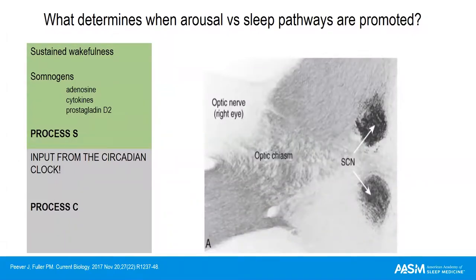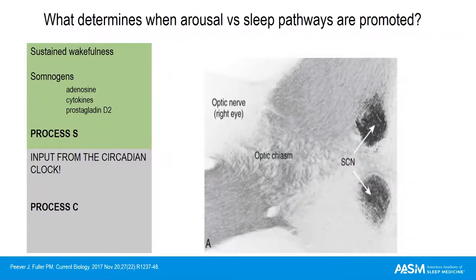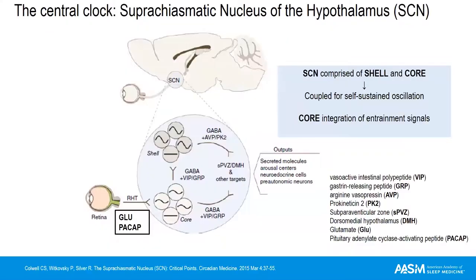The interaction between process S and process C determines when wake-promoting versus sleep pathways are activated. With sustained wakefulness, somnogens accumulate — adenosine, cytokines, prostaglandin D2 — mediating process S. This process is also controlled by input from the circadian clock, process C. Our central clock is located in the suprachiasmatic nucleus of the hypothalamus, behind the optic chiasm. The SCN is a paired nuclei comprised of a shell and a core; their coupling is vital for the self-sustained 24.2-hour oscillation. The core is the primary center for integration of entrainment signals, primarily light, transmitted via glutamate and pituitary adenylate cyclase through the retinohypothalamic tract.